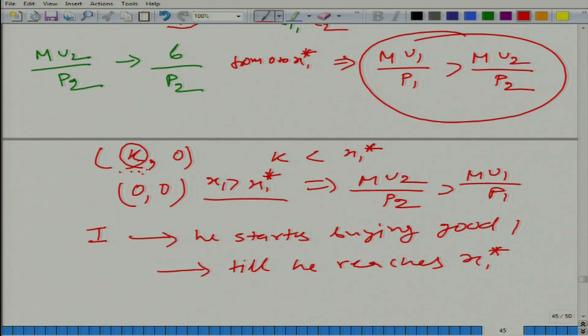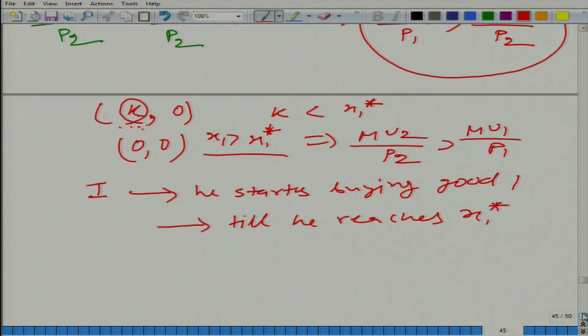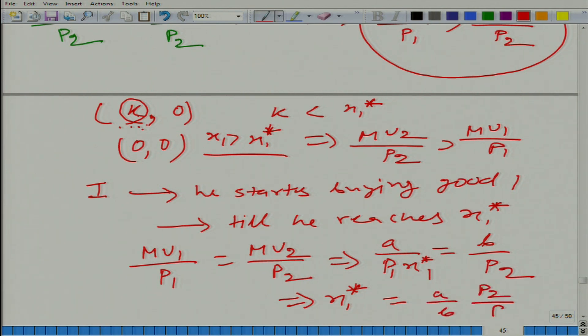And how can we get the x1 star? Do we have any way to figure out x1 star? How? That at this level, mu1 divided by p1 is equal to mu2 divided by p2, and we have value for both of these entities. And how much is mu1 divided by p1? a by p1*x. And mu2 divided by p2 is b by p2. So this gives us x1 star, and x1 star is a*p2 divided by b*p1.